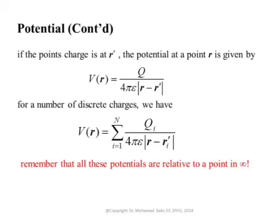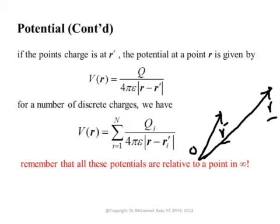If the point charge is not at the origin but at position vector R', and we want the potential at position vector R, we just need the distance between them. That distance is the magnitude of the vector R minus R'. So the potential at position R due to a charge at R' is Q over 4πε times |R minus R'|. This works whether the charge is at the origin or at any other point.